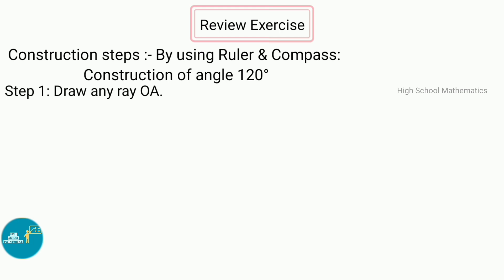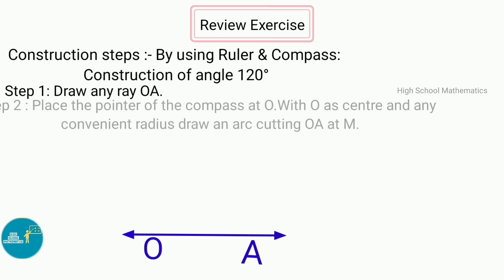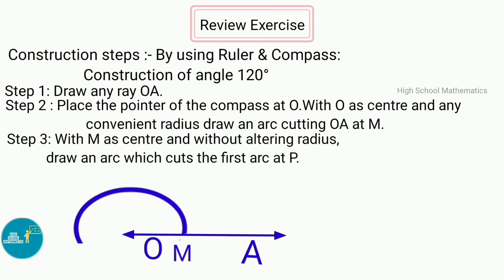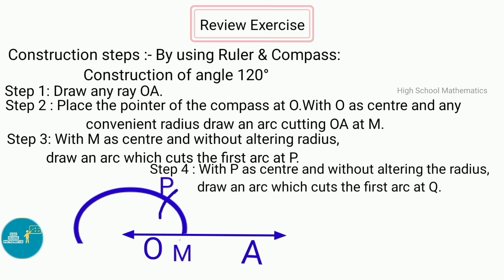Step 1 — draw any ray OA. Step 2 — place the pointer of the compass at O; with O as center and any convenient radius, draw an arc cutting OA at M. Step 3 — with M as center and without altering the radius, draw an arc which cuts the first arc at P.